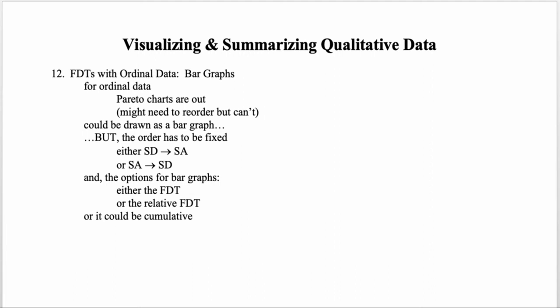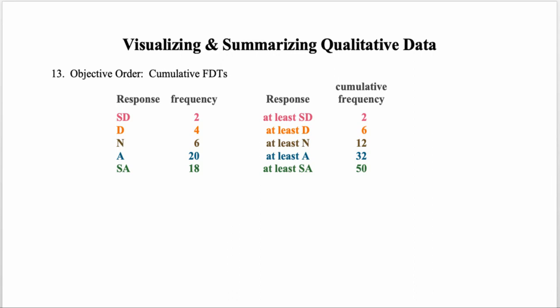The ordering of ordinal values gives us another tool: the cumulative frequency distribution. The ordering allows us to aggregate the data in a way that lets us talk about reaching a certain level or below, or reaching a certain level or above. The labels for the responses change slightly — instead of 'strongly disagree' as a single category, we talk about all people who responded 'at least strongly disagree,' 'at least neutral,' or 'at least strongly agree.'